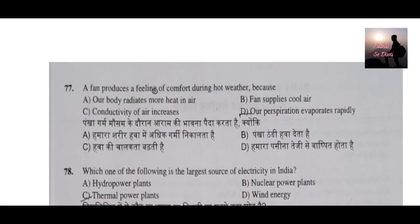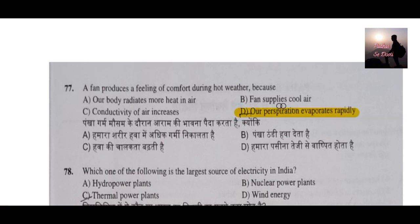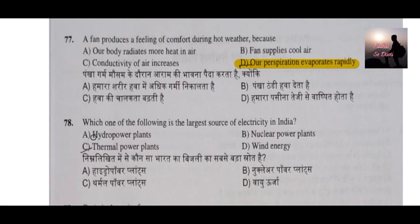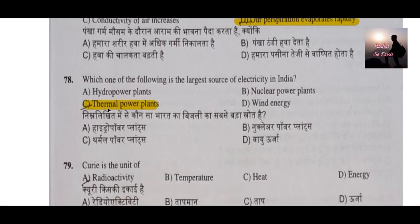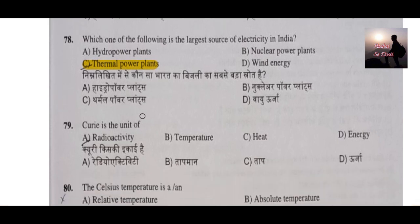Question number 77: A fan produces a feeling of comfort during hot weather because of what? It is because our perspiration evaporates rapidly — transpiration evaporates quickly due to the fan, giving us a cooling comfort in the hot season. Question number 78: Which one of the following is the largest source of electricity in India? It is thermal power plants — electricity generated from coal or natural gas. India uses maximum coal for this, so thermal power is the largest electricity source in India.